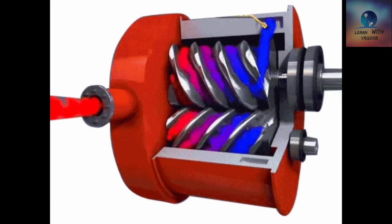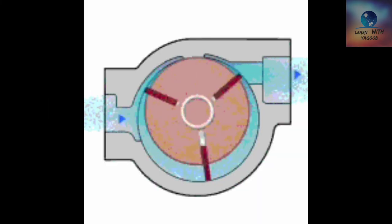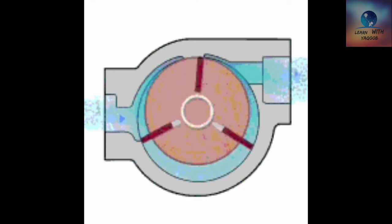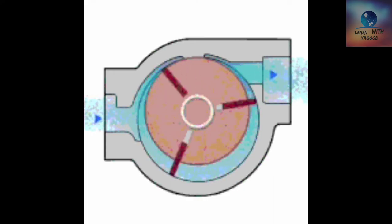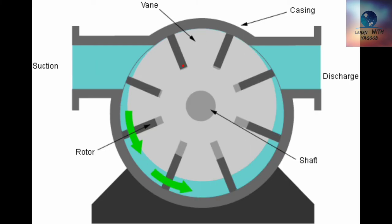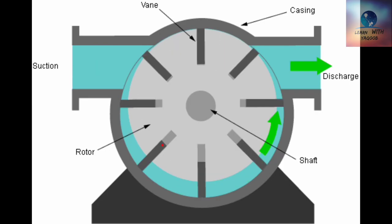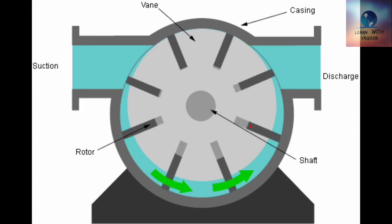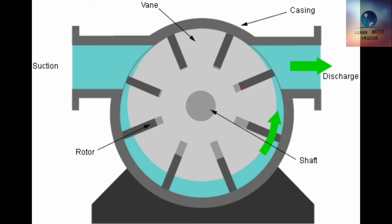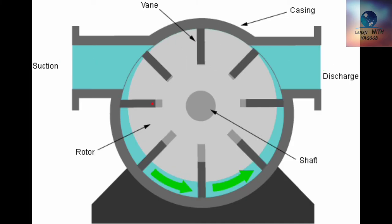A sliding vane compressor relies on a series of vanes mounted in a rotor which sweep along the inside wall of an eccentric cavity. The vanes, as they rotate from the suction side to the discharge side of the eccentric cavity, reduce the volume of space they are sweeping past, compressing the gas trapped within the space. The vanes glide along on an oil film which forms on the wall of the eccentric cavity, providing a seal.